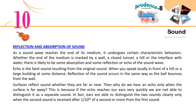Reflection and Absorption of Sound: as a sound wave reaches the end of its medium — whether marked by a wall, a closed tunnel, a hill, or the interface with water — there is likely to be some absorption and some reflection, or echo, of the sound wave. Echo is the faint sound resulting from the original sound. When you speak loudly in front of a hill or large building, reflection of sound occurs in the same way as a ball bounces from a wall. Surfaces reflect sound whether they are far or near; but if the echo reaches our ears very quickly, we cannot distinguish it as a separate sound.